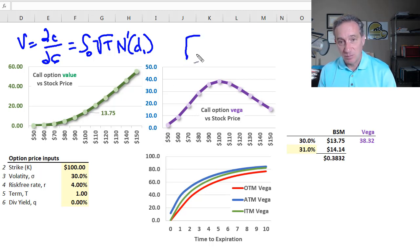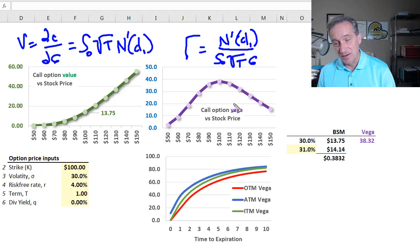In my previous video, we looked at gamma. The formula of gamma in the numerator has that same N' of D1, the PDF of the standard normal distribution, and its denominator is stock price times square root of maturity times sigma. My point is that option gamma's shape is also largely that standard normal bell curve, the PDF version, so gamma, like Vega, are both highest when the option is at the money or nearly at the money.